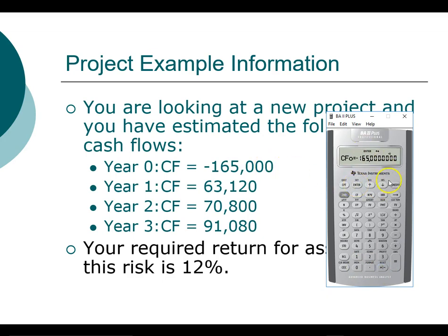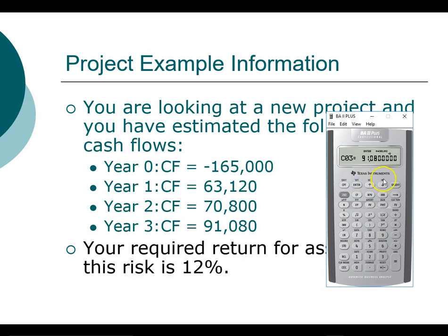Press enter. Cash flow in year one is $63,120 — press enter. Year two is $70,800 — press enter. And year three is $91,080 — press enter. What we need to do now, and this is very important, is write down all the net present values at different discount rates.